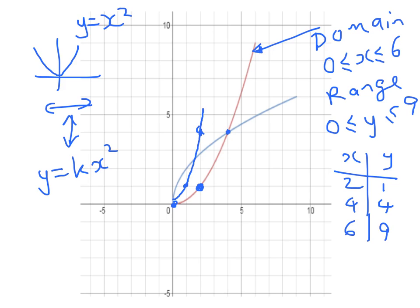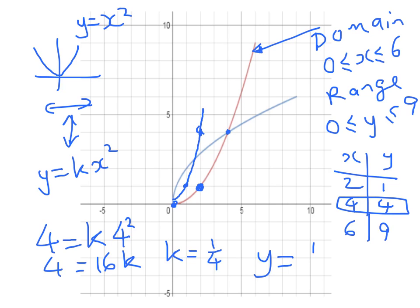So some of you will see this just by looking, but I'll show you how to work it out if you don't see it. So we're going to take one of those points, and we substitute it in: 4 is equal to k times x squared. So 4 is equal to 16k, k must equal 1 quarter, and my equation is y equals 1 quarter x squared.